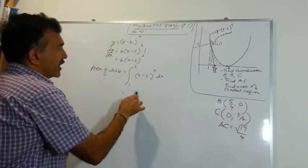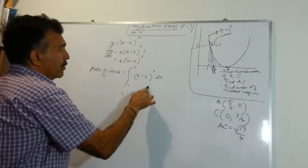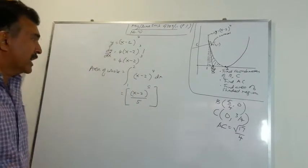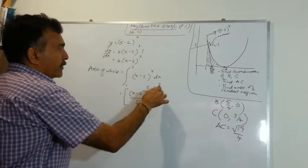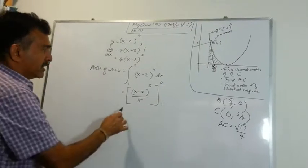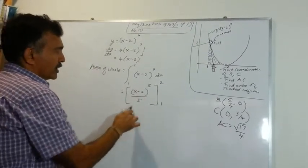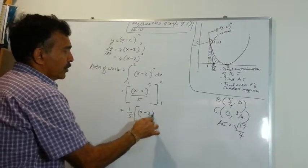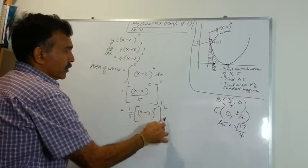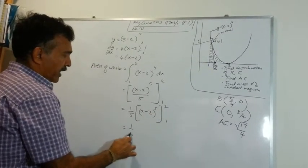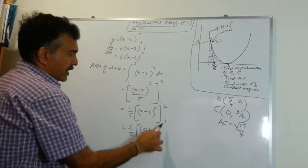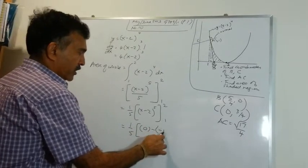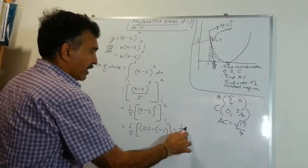Let's integrate: we have (x minus 2), increase the power by 1 to get power 5, and divide by 5. Evaluating from 1 to 2: plugging in 2 gives (2 minus 2) to the power of 5 which is 0; plugging in 1 gives (1 minus 2) to the power of 5 which is minus 1 to the power of 5 equals minus 1, times 1/5. So the area of the whole region is 1/5 unit squared.